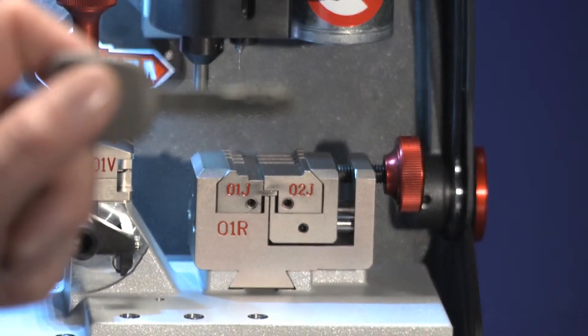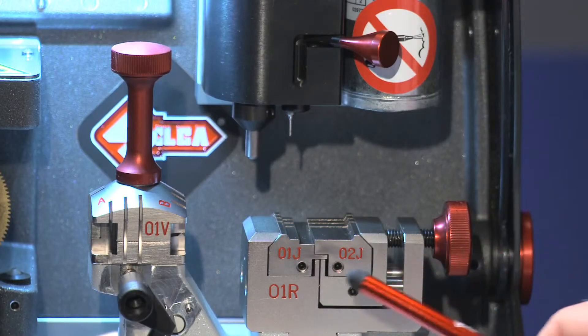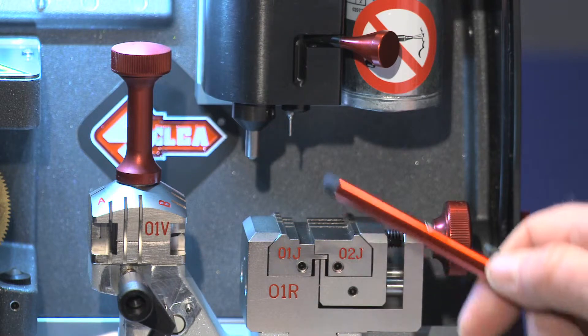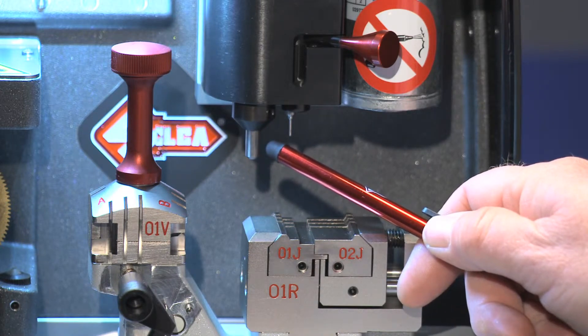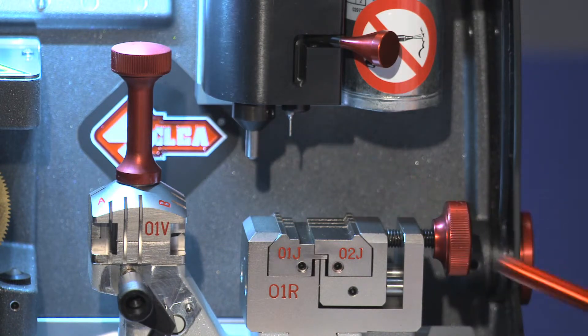The right side of the Futura is the laser track and dimple side. The 01R clamp holds dimple and laser keys. The cutter spindle holds the appropriate cutter or tracer for calibration purposes. The mobile tracer is used to decode dimple and laser keys.